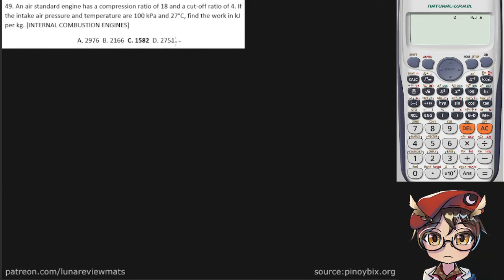An air standard engine has a compression ratio of 18 and a cutoff ratio of 4. Let's write that down. So k is 18, r sub c is 4. If the intake air pressure and temperature are 100 kPa and 27 degrees C, which is also 300 kelvin, find the work in kilojoules per kilogram.